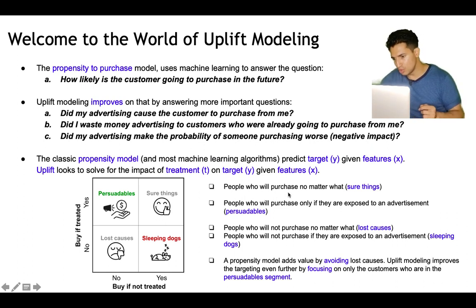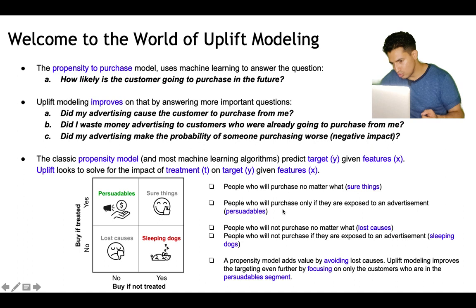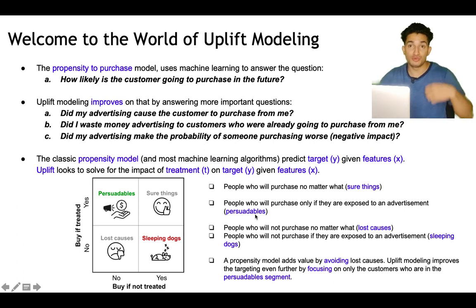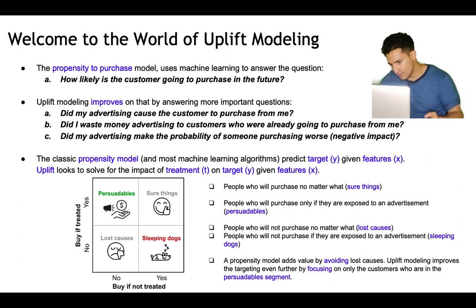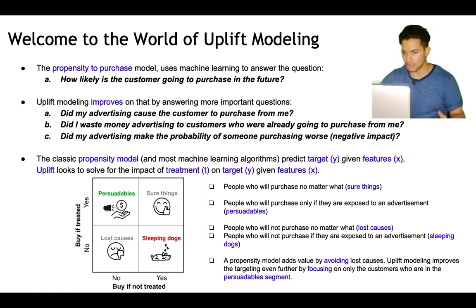First, people who will purchase no matter what — these are the 'sure things' and we don't need to waste advertising money on them. Second, people who will purchase only if exposed to the advertisement — these are the 'persuadables,' who should actually be called or advertised. Third, people who will not purchase no matter what are the 'lost causes' — there's no point showing them ads as it's a waste of money.